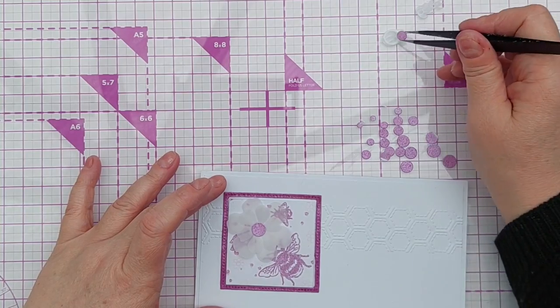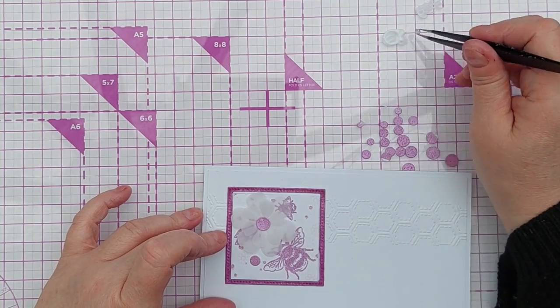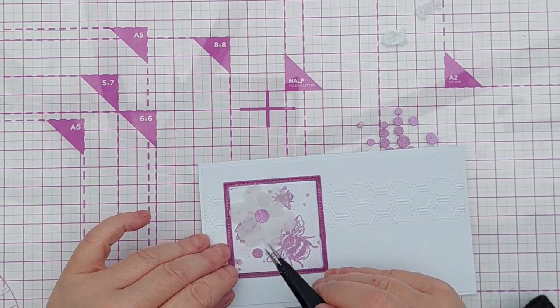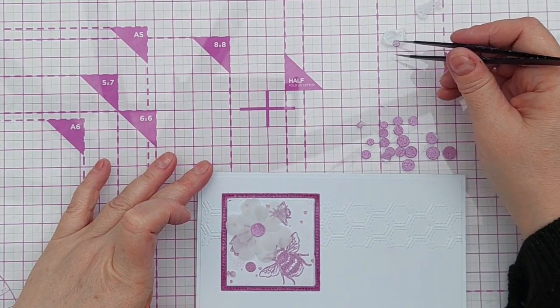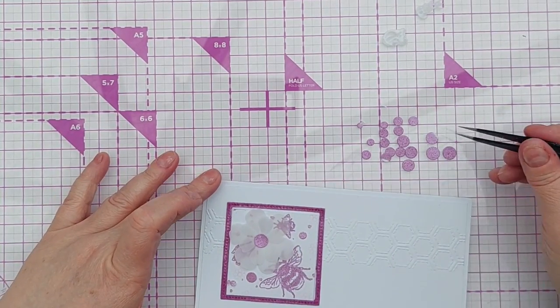Then dot a couple of smaller circles here and there. This just adds a bit more texture and color to the background. I can use it to cover up any blemishes that I don't like.